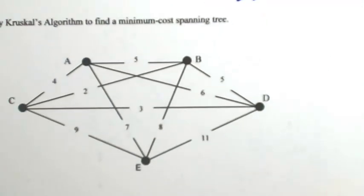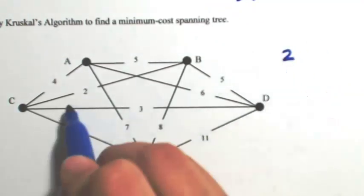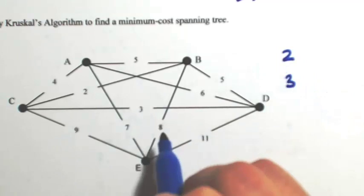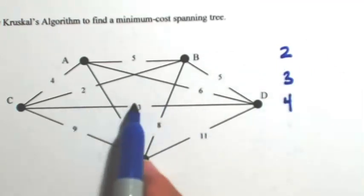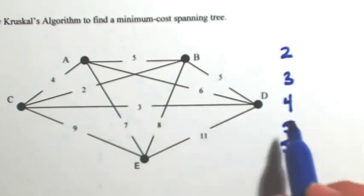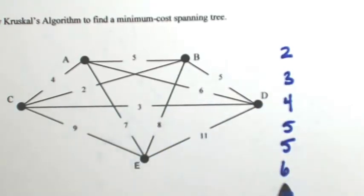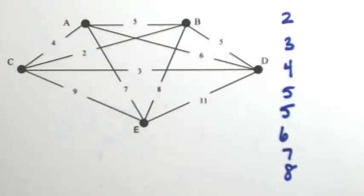Look at another one. We'll do the same thing. Start by listing out the edges in order. So we have a 2, 3, 4, two 5s, 6, 7, 8, 9, and 11.